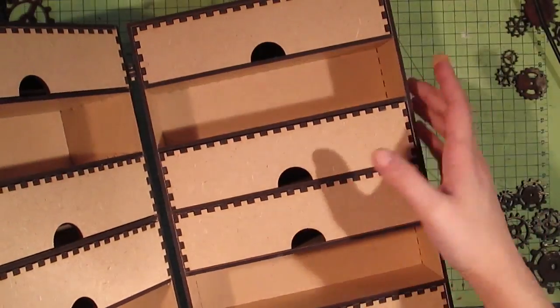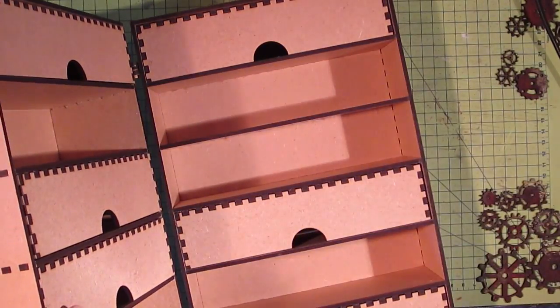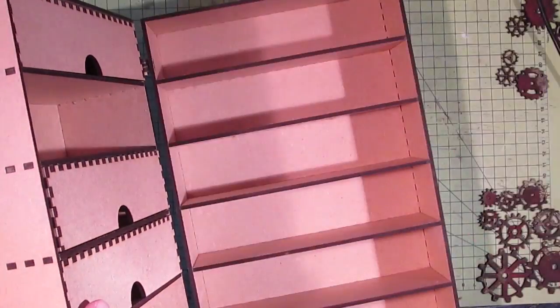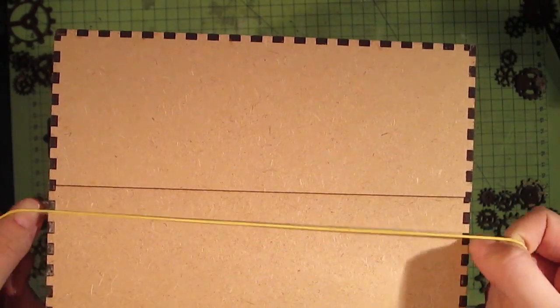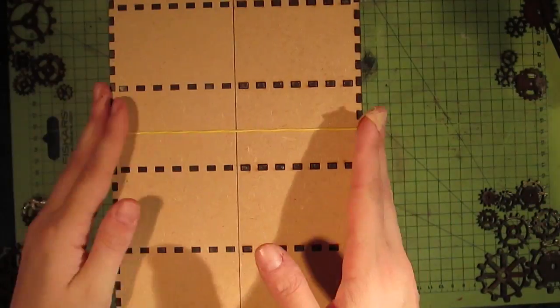The next step is to pull out all the drawers, take a rubber band and use it to close the chest of drawers.